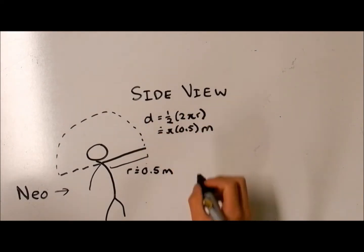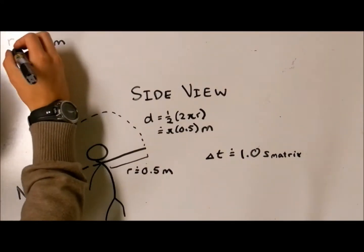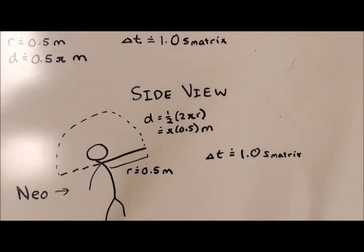This gives us the total distance traveled by the tip of the arm, pi radius, to be approximately 0.5 pi meters, which is traveled over a duration of approximately 1.0 seconds matrix time.